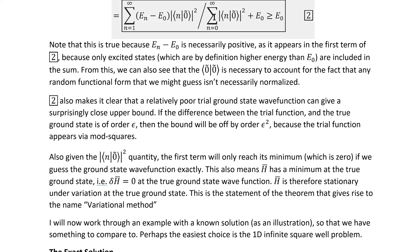Given that this term only vanishes for the case of the true ground state wave function, h-bar has a minimum at the true ground state, meaning its variation at the true ground state is zero. It's therefore common to hear people say that h-bar is stationary under variation at the true ground state, and it's this statement of the theorem that gives rise to the name variational method.